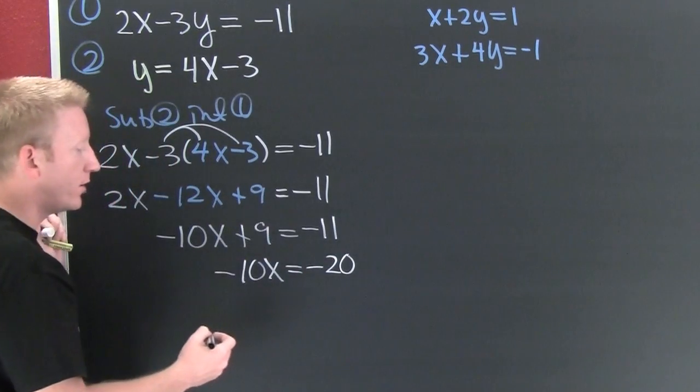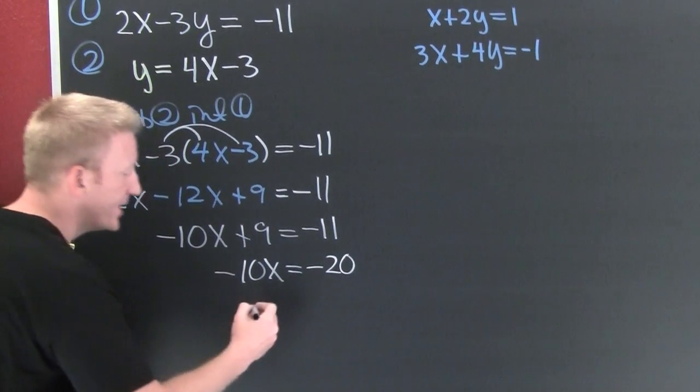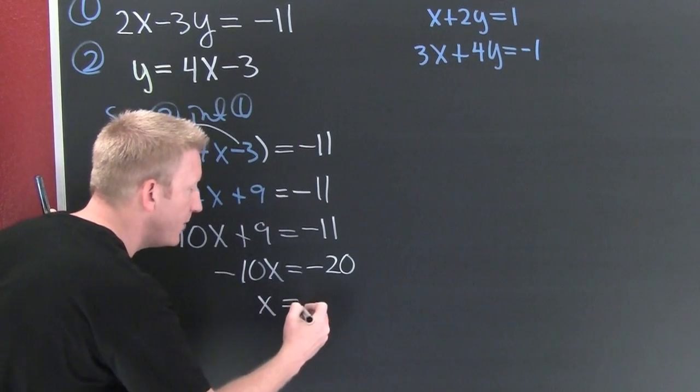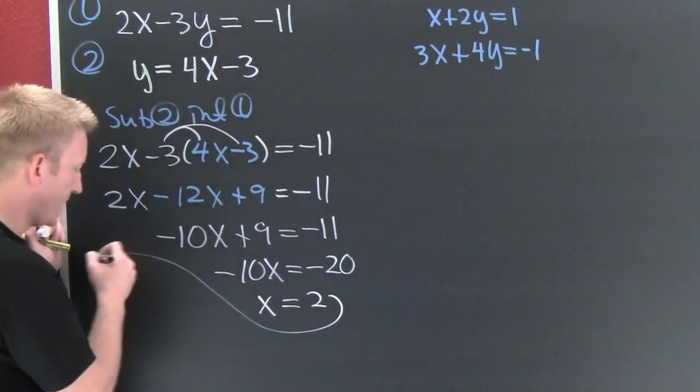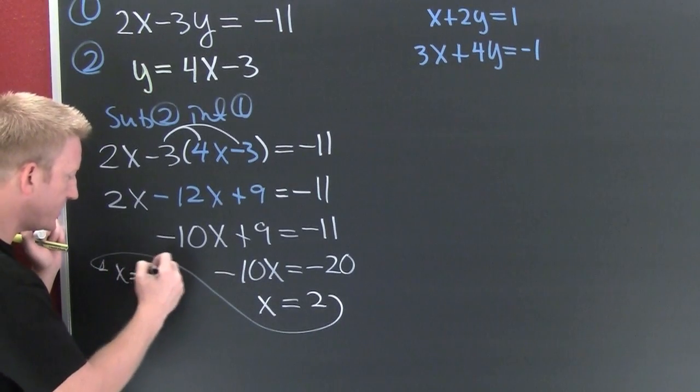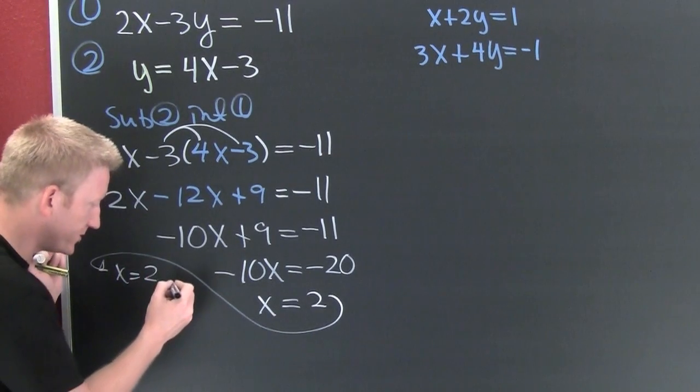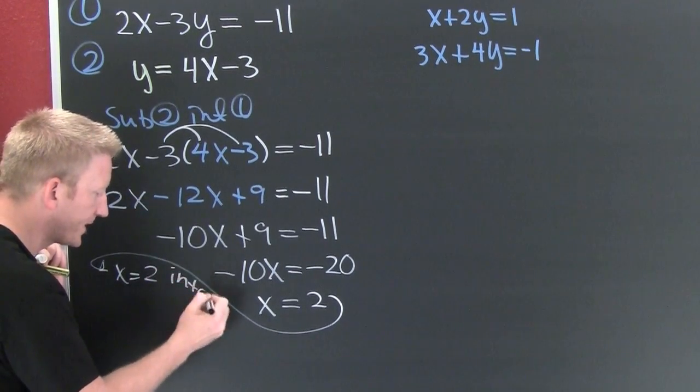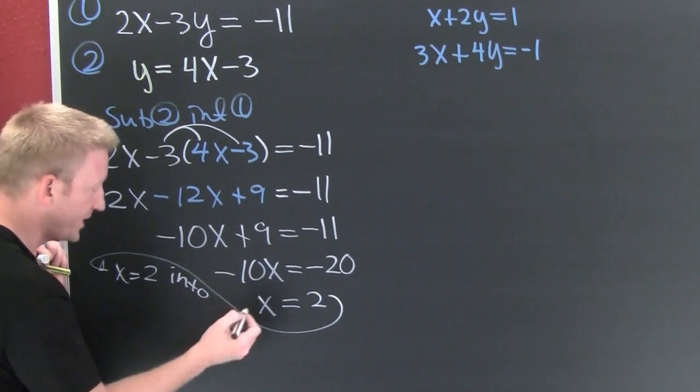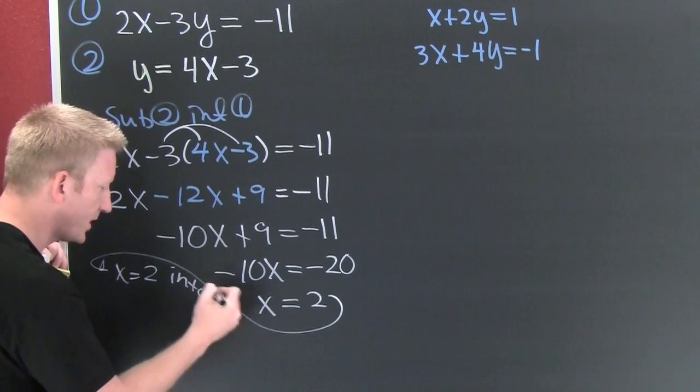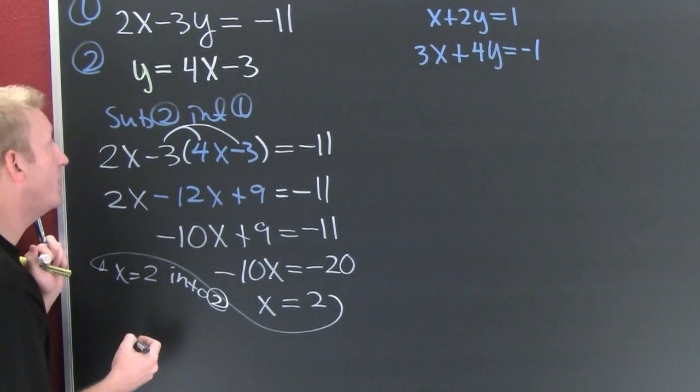Finish him. So then it appears to me that x is gonna be 2. Now what do I do? I'm gonna take that x equals 2 and sub it into one of the originals. Which one of the originals? Why not 2?